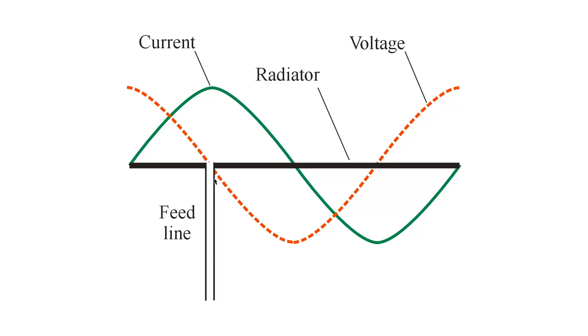It so happens that the feed line exists at a voltage node, that is a voltage minimum, and a current loop or a current maximum. That means it's a current fed antenna, and that's all we mean when we say current feed.